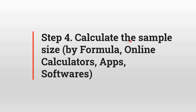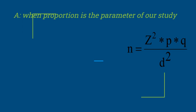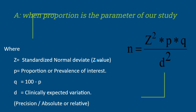Step 4 is to calculate the sample size. There are various ways: applying the formula directly, or using online calculators, apps and softwares. When proportion is the parameter of our study, the formula is n = z² × p × q / d², where z is the standard normal deviate, p is the proportion or prevalence from the similar study found through review of literature, q is 100 minus p, and d is clinically expected variation or precision, which can be either absolute or relative. This precision is the value altered by the researcher to adjust the sample size.